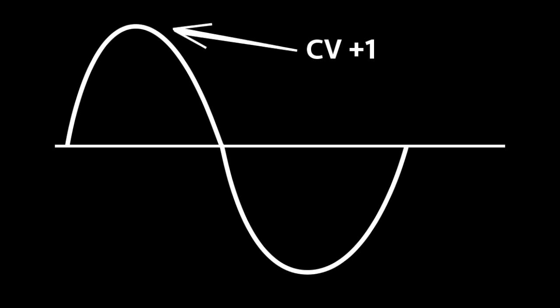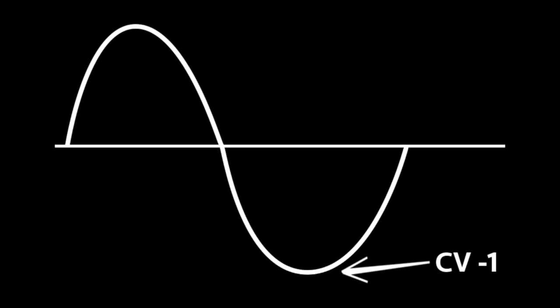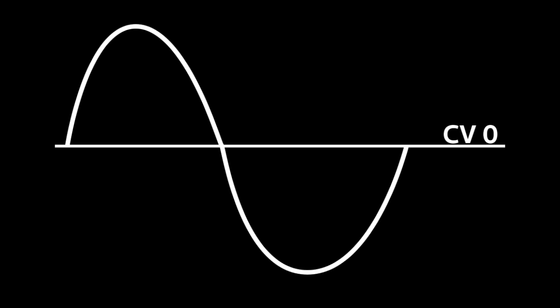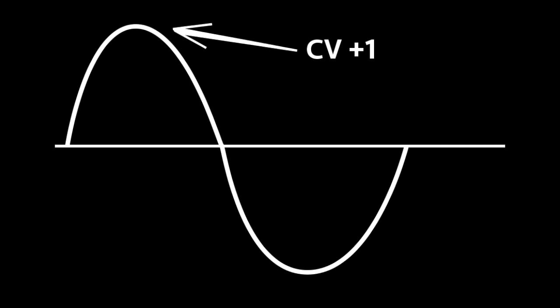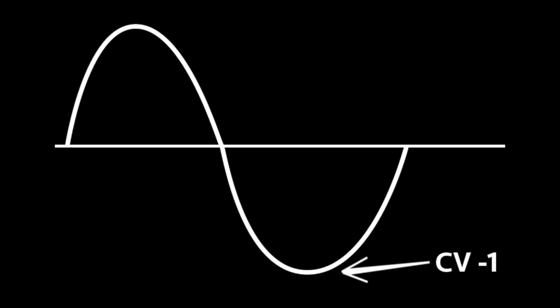Here we have a visual representation of a CV sine wave. This sine wave has a positive and a negative peak. Don't worry about what that plus one and minus one means right now. All you need to know is the top of it is a plus one, the bottom of it is a minus one. The rest of it will start to make sense as we go along.